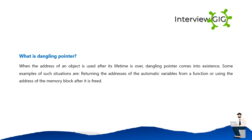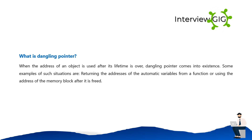What is a dangling pointer? When the address of an object is used after its lifetime is over, a dangling pointer comes into existence. Examples include returning the address of an automatic variable from a function, or using the address of a memory block after it has been freed.